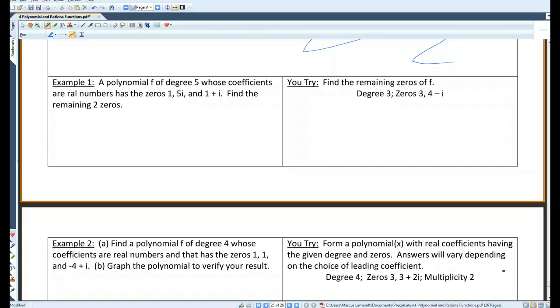Let's do an example. A polynomial f of degree 5, whose coefficients are real numbers, has the zeros 1, 5i, and 1 plus i. Find the remaining two zeros. Since f has coefficients that are real numbers, complex zeros appear as conjugate pairs. So basically, if 5i is a zero, then negative 5i is also a zero. If 1 plus i is a zero, then 1 minus i is also a zero.